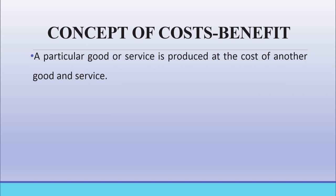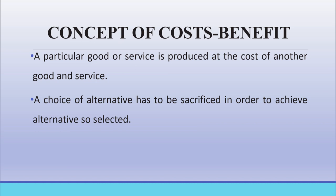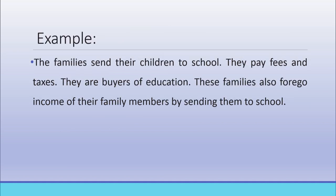The cost-benefit approach says that a particular good or service is produced at the cost of another good or service — a choice of alternative has to be sacrificed in order to achieve the selected alternative. For example, families that send their children to school pay fees and taxes; they are buyers of education. These families also forego income of their family members by sending them to school.